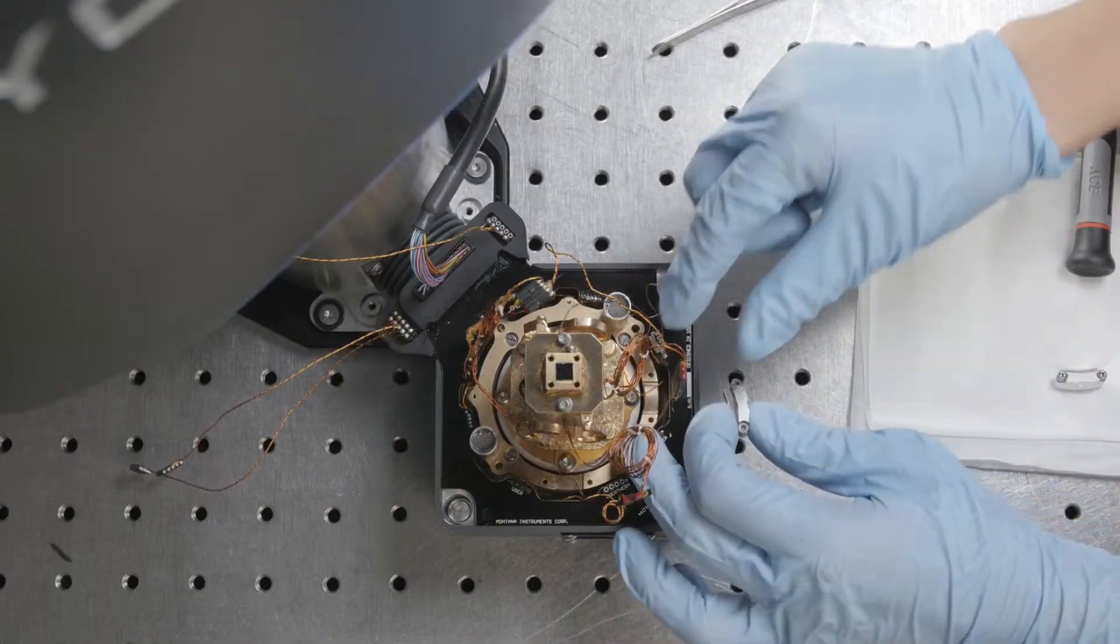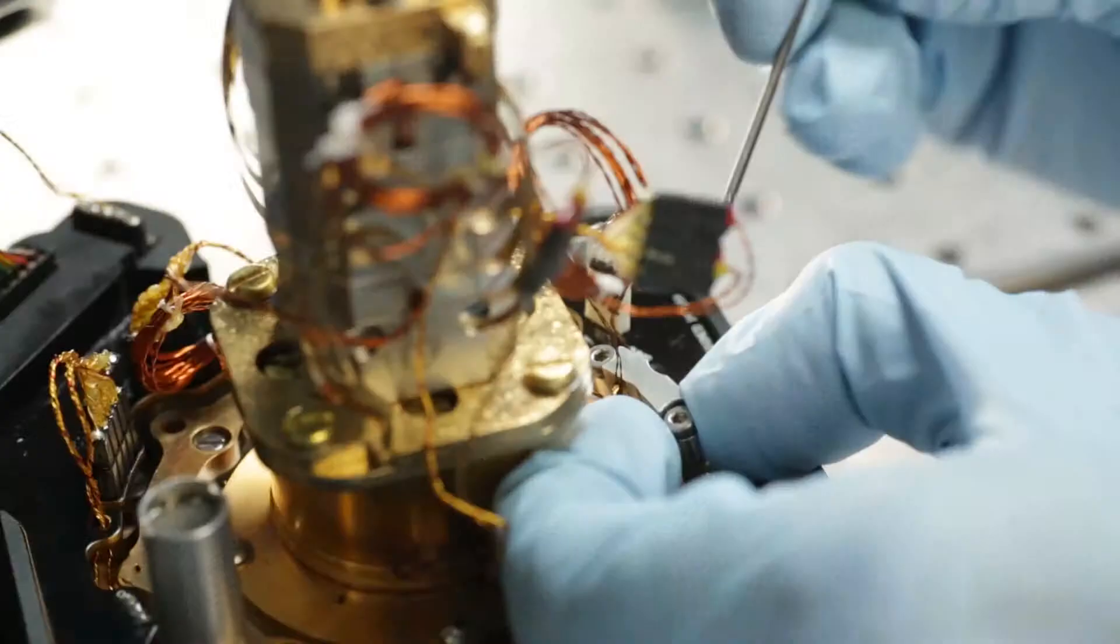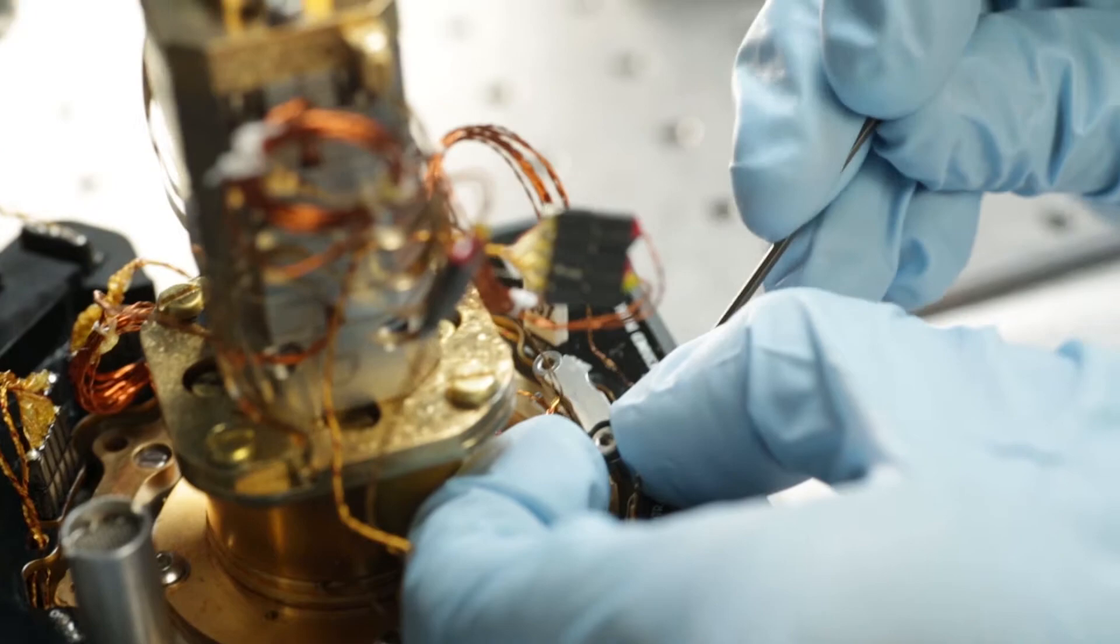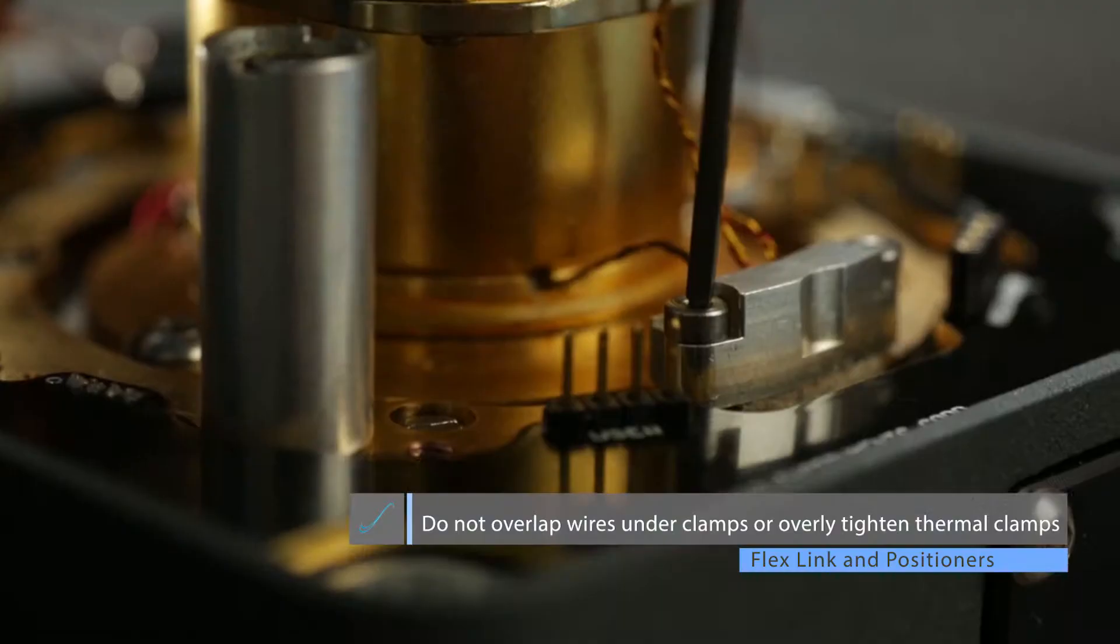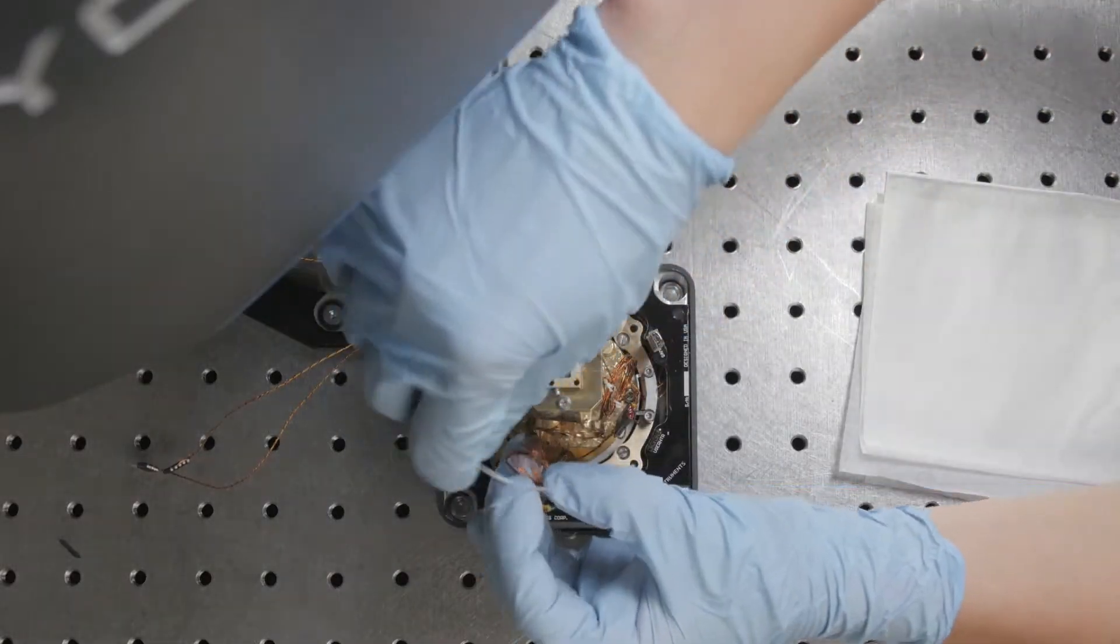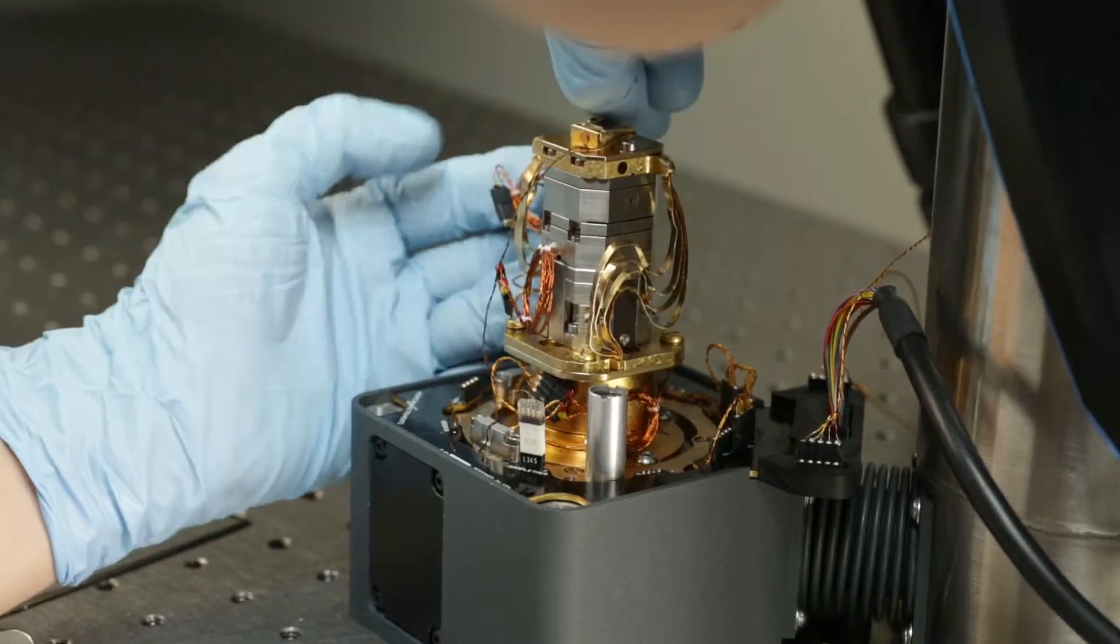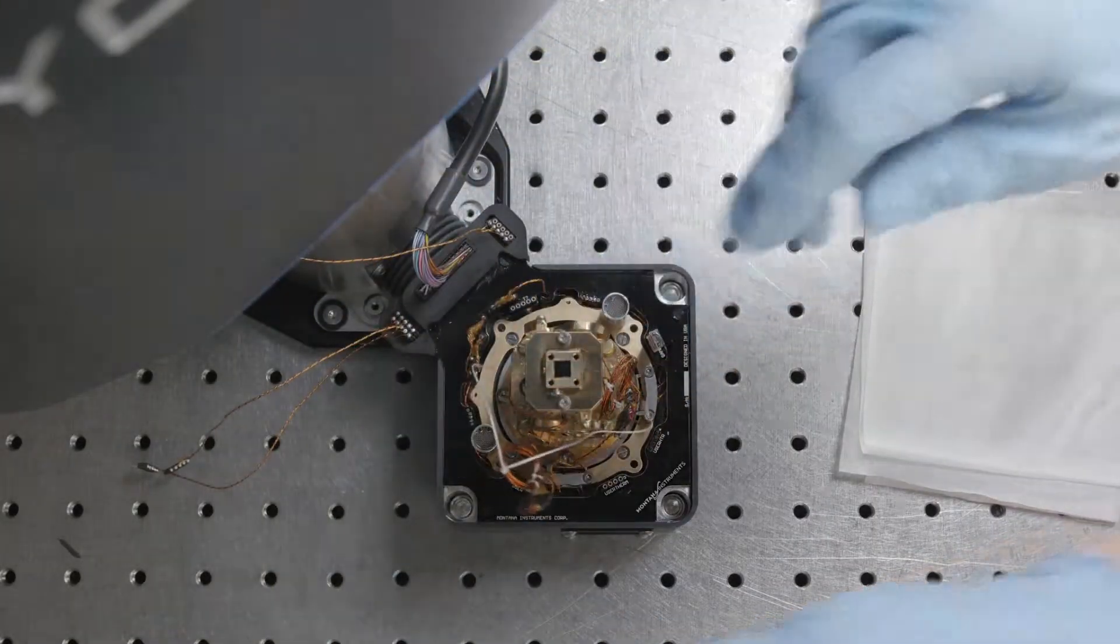Then I'm going to add the thermal clamps. When you put them on you'll want to make sure that the wires don't overlap and you want to make sure that it's not very tight because then you could short the wires. We'll want to manage the wire within the sample space at least preliminarily since we don't want it to touch the radiation shield and induce a heat load.